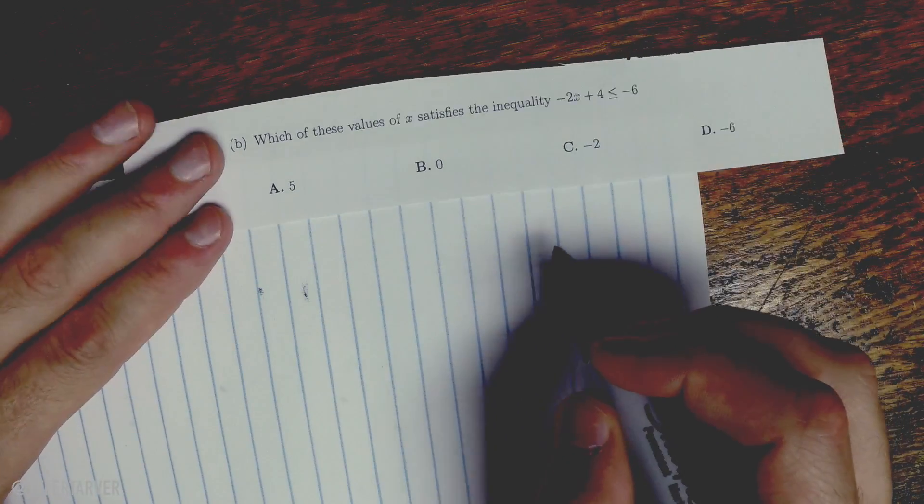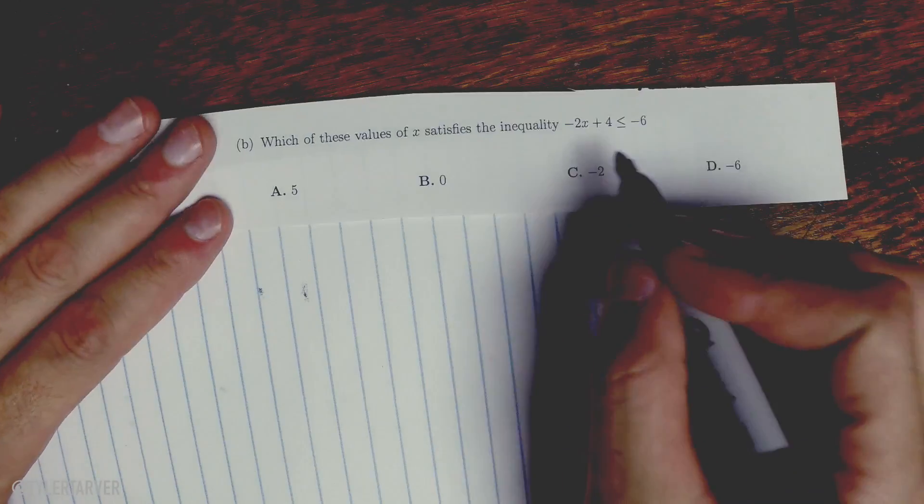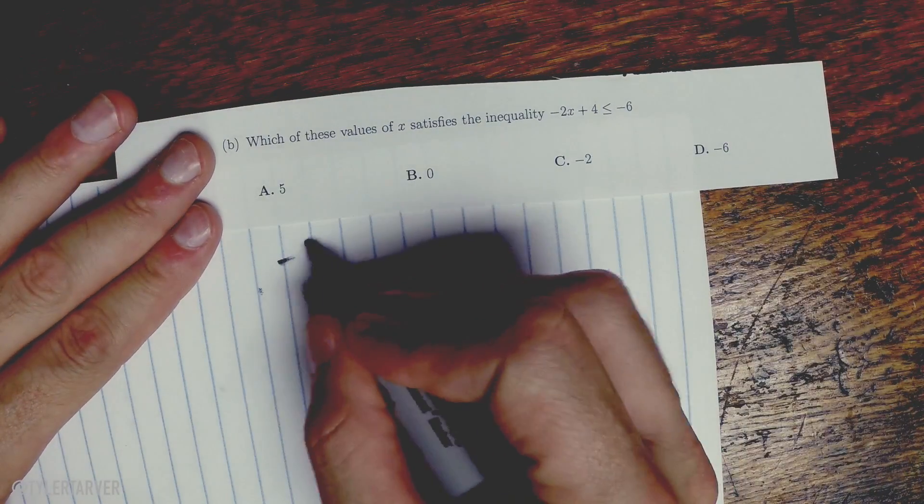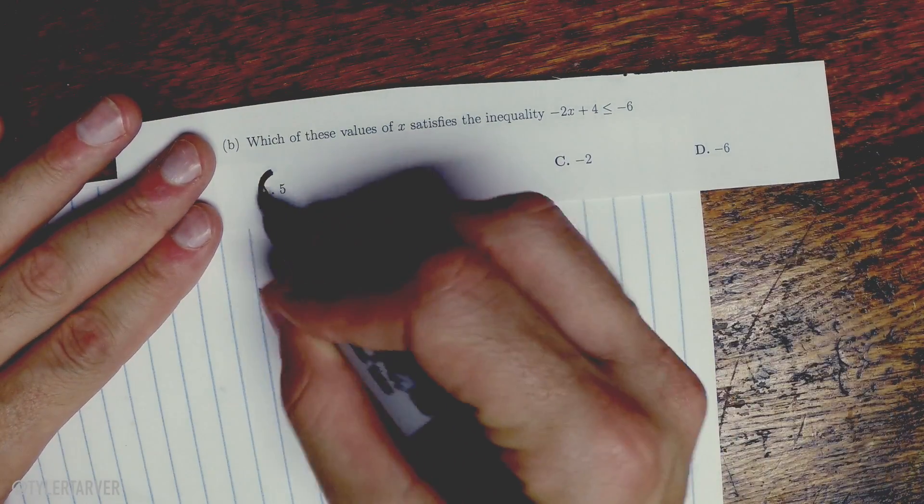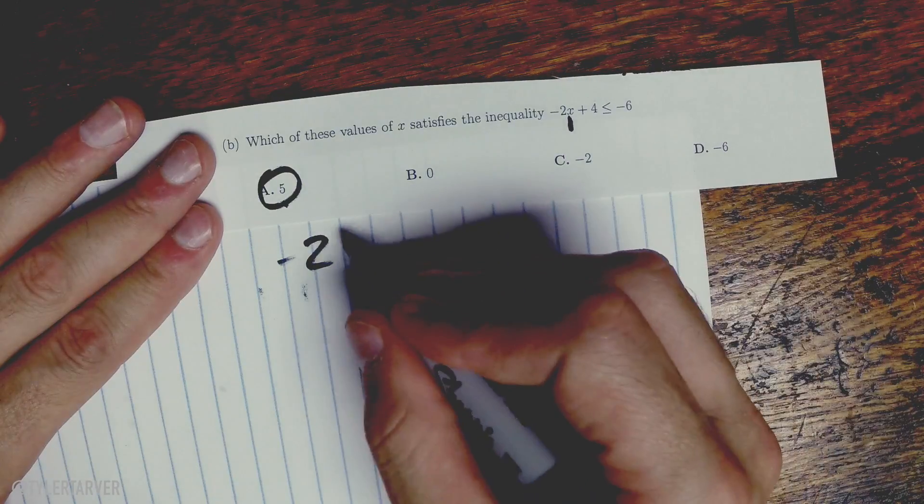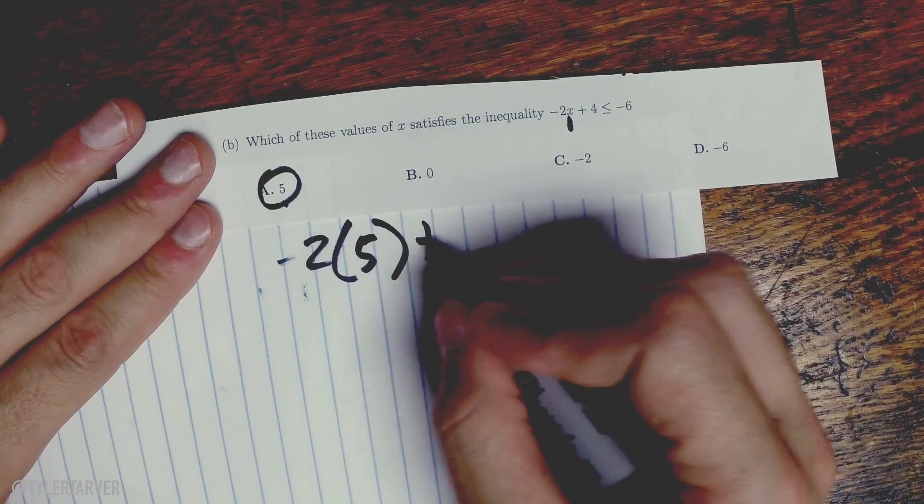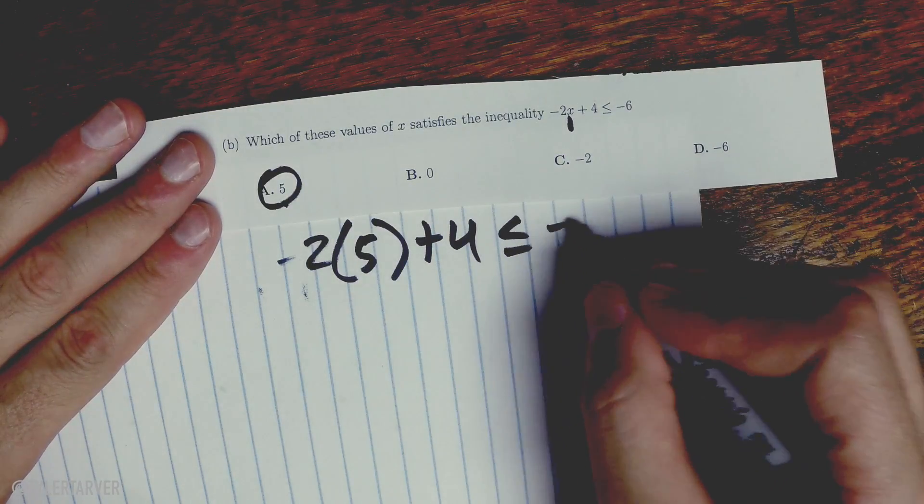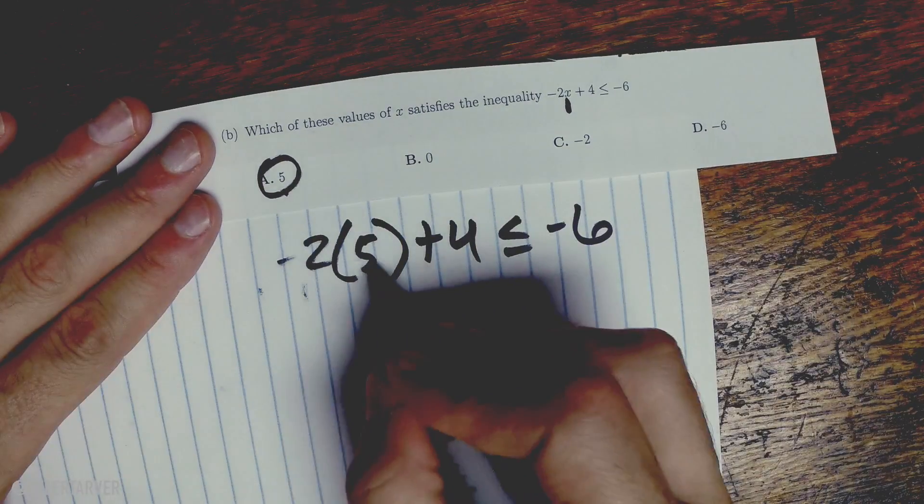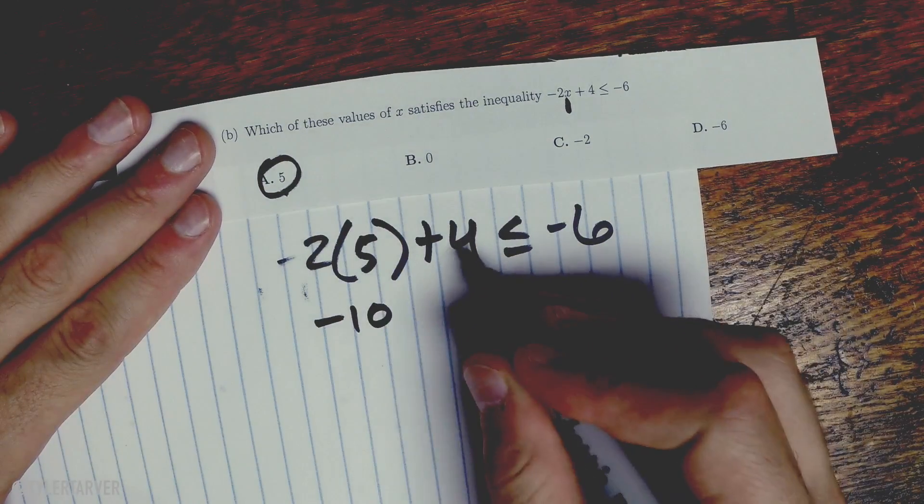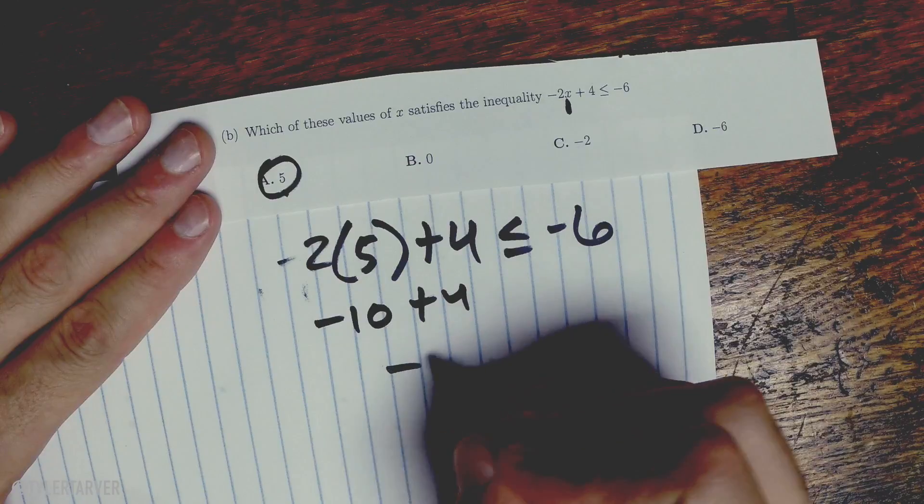Okay, so let's take 5. So we're going to plug it in for x. So -2 and I'm going to plug in 5 right where x is, which is 5, plus 4 is less than or equal to -6. Okay, so -2 times 5 is -10 plus 4 is -6.